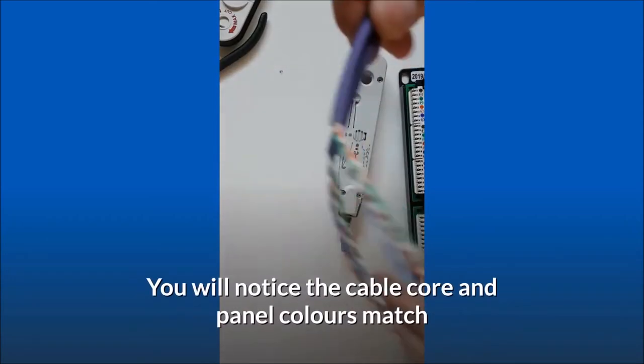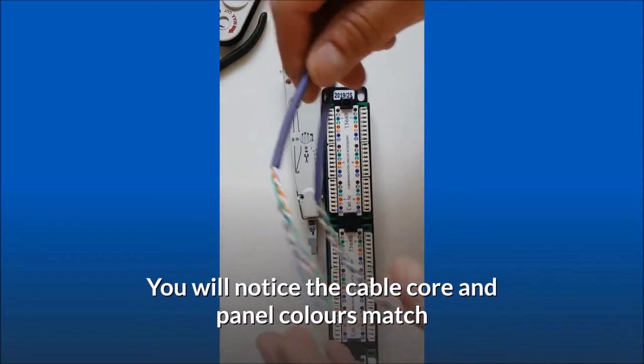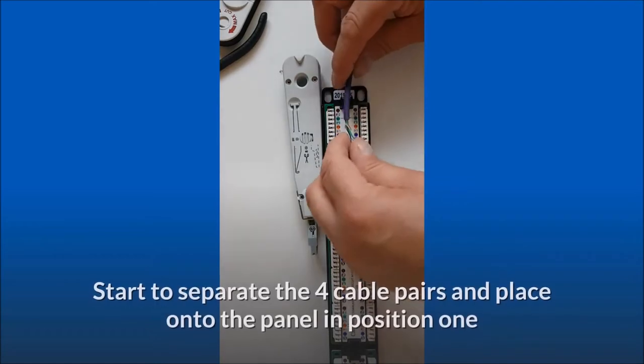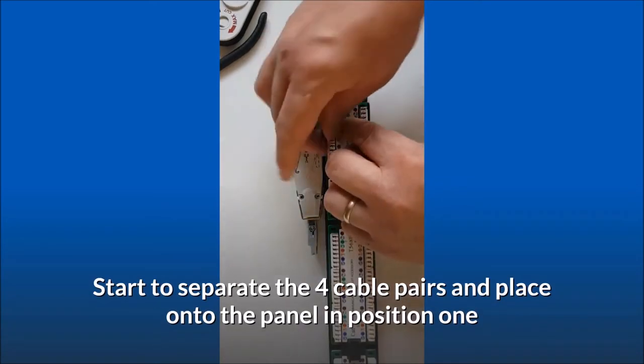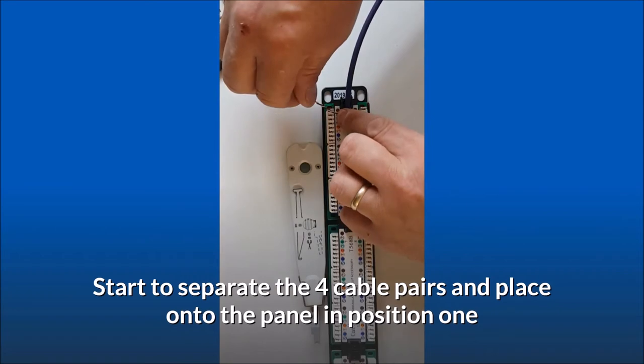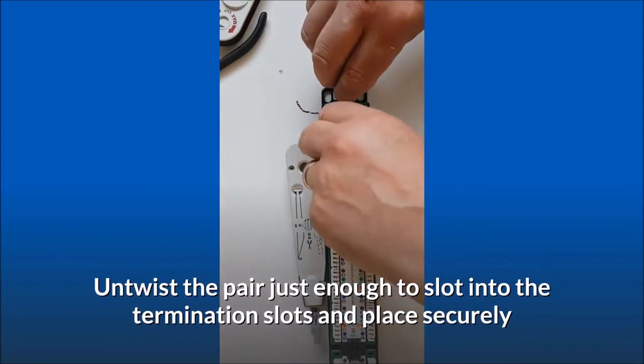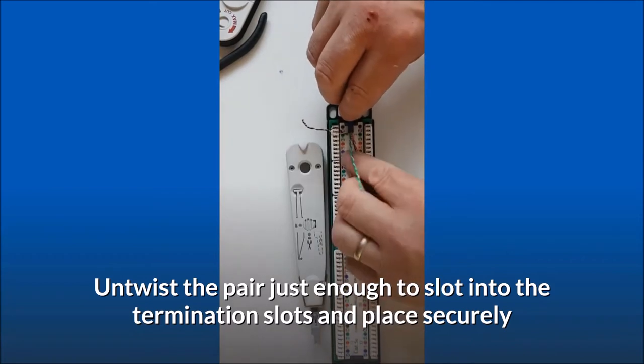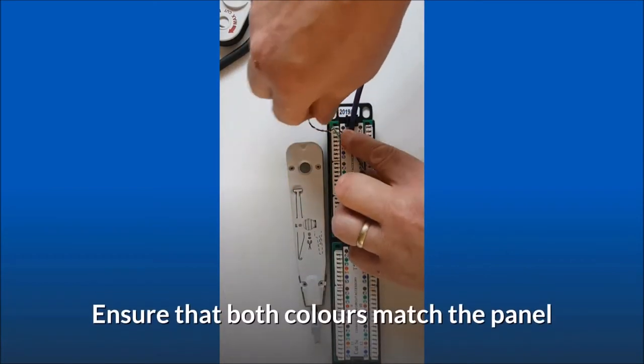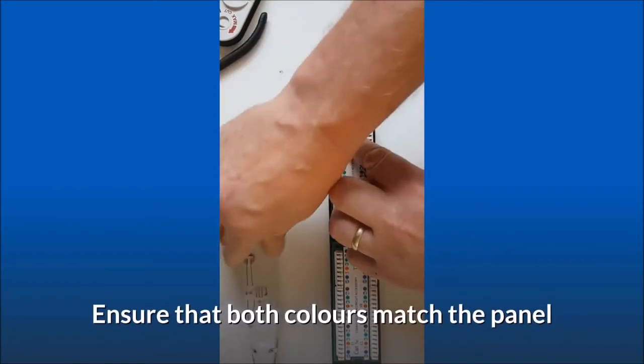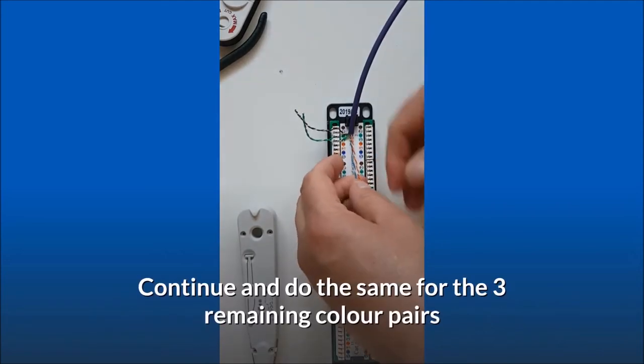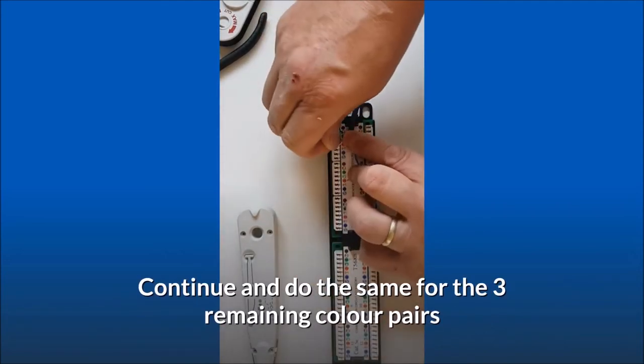You will notice the cable core and panel colors match. Start to separate the four cable pairs and place onto the panel in position 1. Untwist the pair just enough to slot into the termination slots and place securely. Ensure that both colors match the panel. Continue and do the same for the three remaining color pairs.